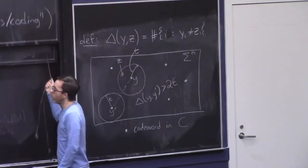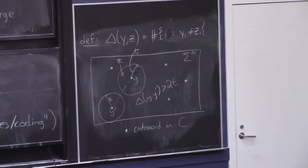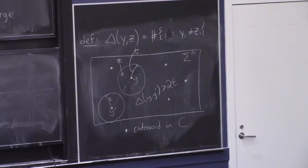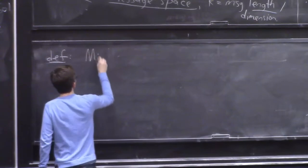If we're given a code and we want to understand how many errors T can we potentially tolerate while still being able to decode any corrupted received word, then it's governed by this minimum distance between any two codewords. So we'll make a definition for this. This is one of the most important properties of a code.